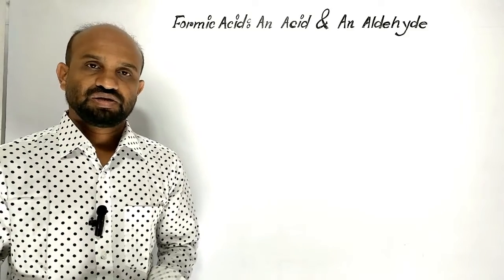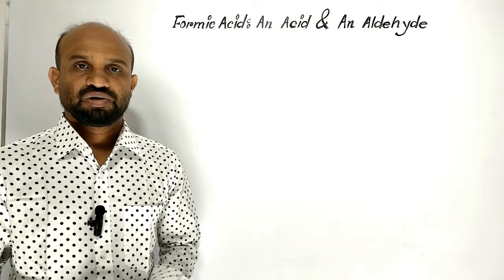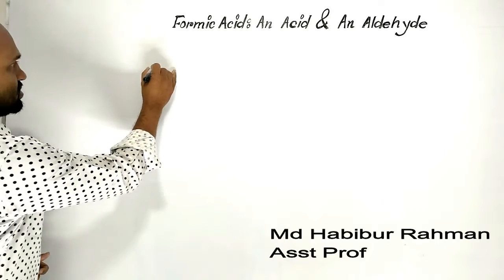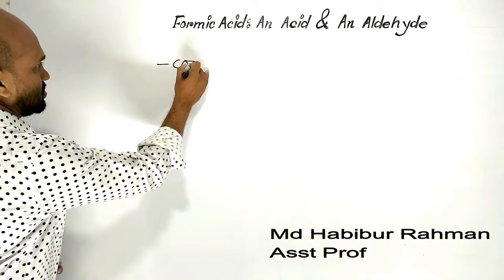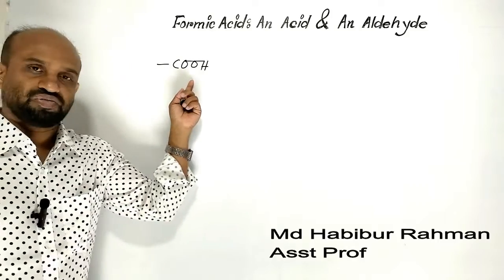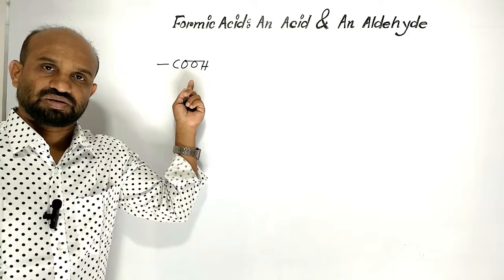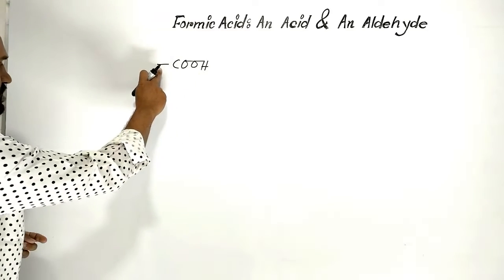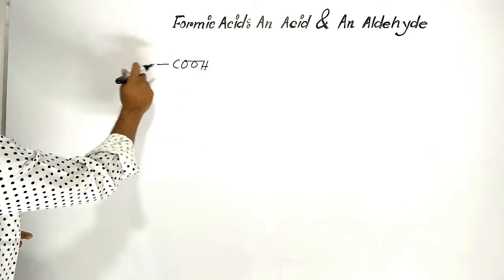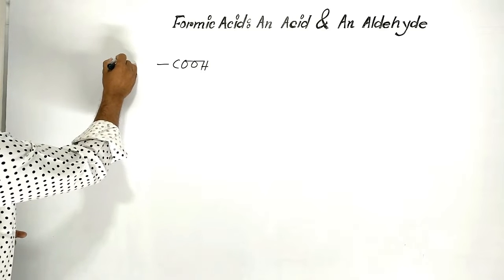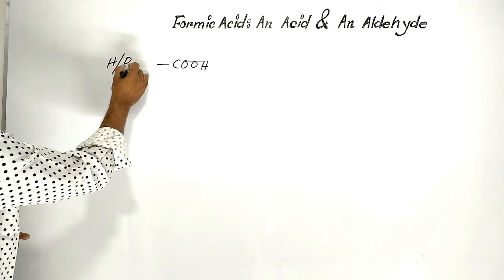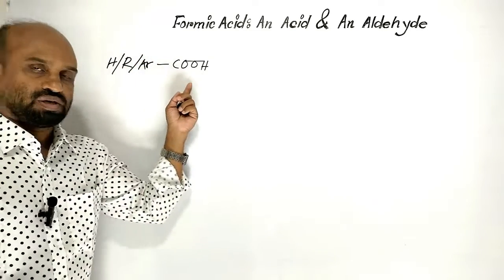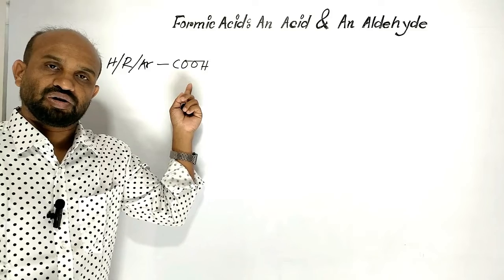First of all, let's see the general formula of carboxylic acids and aldehydes. This is the functional group of carboxylic acids. Its name is carboxyl group. This valency will be satisfied by hydrogen, alkyl group, or aryl group, giving us the general formula of carboxylic acids.